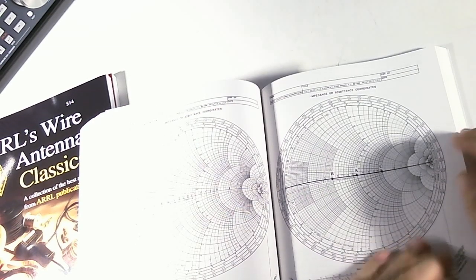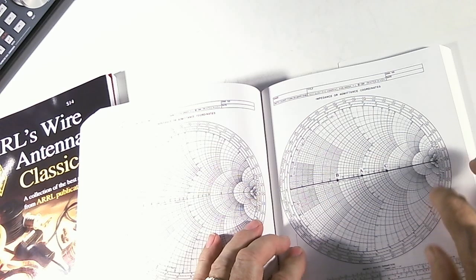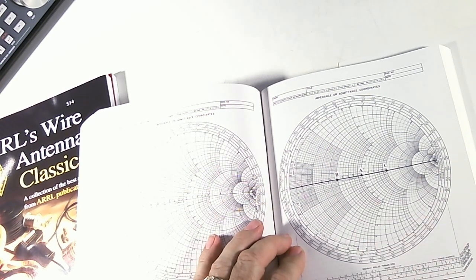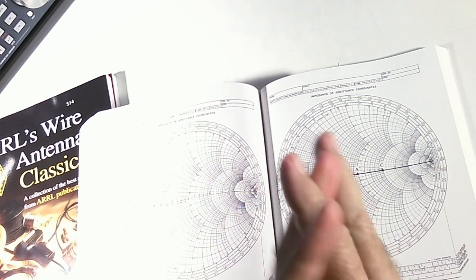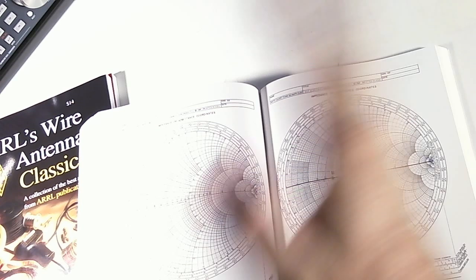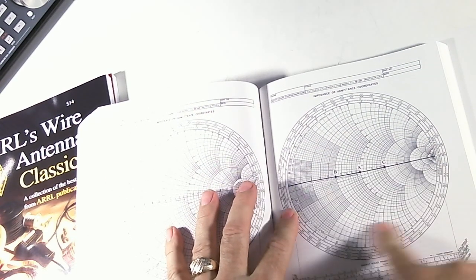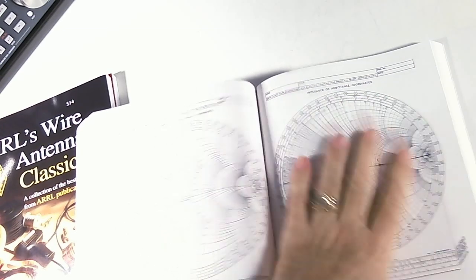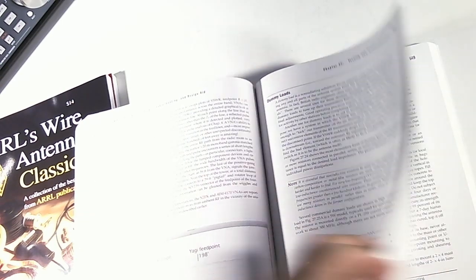Here's some, these are called Smith charts I believe, which is where you chart the field of which the antenna receives. You know, what direction does it receive best in, and so you plot your results on these charts.